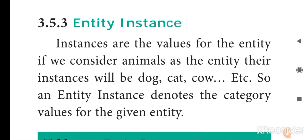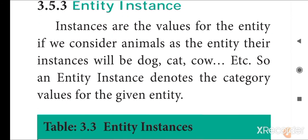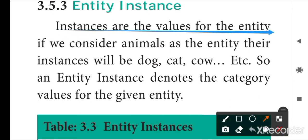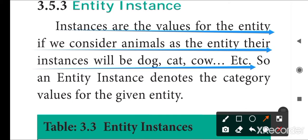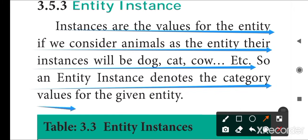The next type is entity instance. Instance means the values for the entity. If we consider 'animals' as the entity, their instances will be dog, cat, cow, crow, etc. An entity instance denotes the category values for the given entity.